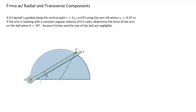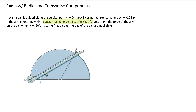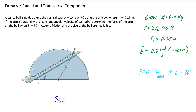Welcome back to Structure Free Learning. In this video we're going back to dynamics and look at the equations of motion using radial and transverse — or polar — coordinates. In this problem, I've got a 0.5-kilogram ball at point P moving along a vertical circular path with an origin at O. This arm OA is pushing that ball up over the hill with a constant angular velocity of 0.5 radians per second. We want to find the force on the arm when theta equals 30 degrees.